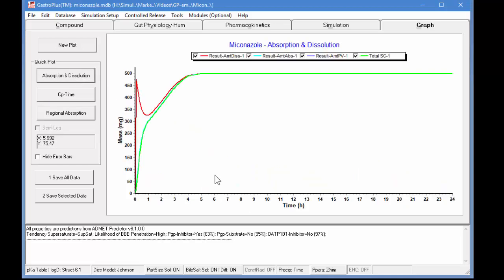If we look at the absorption and dissolution plots, the systemic circulation and the amount in the portal vein cover up the amount absorbed. The cyan line is the amount absorbed. The red line is the amount dissolved and you see that the compound is dissolved very quickly. This all occurs in the stomach where you have a lower pH and fairly high solubility so you have quick dissolution in the stomach. Then as the compound starts to work its way down the GI tract the pH increases which causes less ionization and therefore the solubility decreases and the compound precipitates.